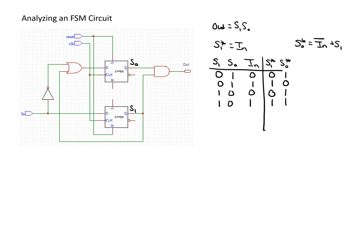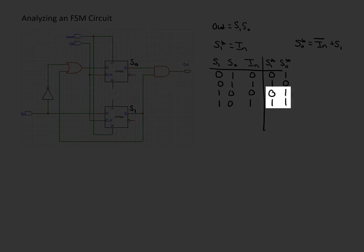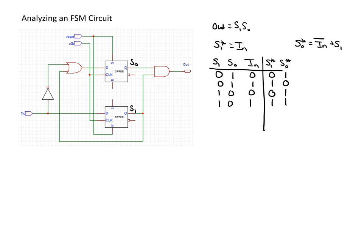Following the same procedure, we look at new next states. State 0,1 is already evaluated; state 1,1 is new, so we evaluate it for both input values. S1* again follows the input, and S0* takes on the value of S1, giving 1 and 1. We look at the resulting next states — both 0,1 and 1,1 have already been evaluated, so we can stop. This means we never enter the 0,0 state and don't need to evaluate it. For outputs, the equation (S1 AND S0) is only 1 when both bits are 1, and 0 otherwise.